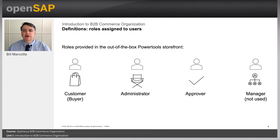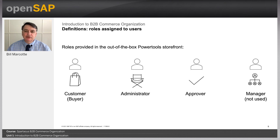The types of users — the roles — are also very important to understand. There are buyers, administrators, approvers, and managers. Buyers are officially named 'customers' inside a B2B commerce organization, but to avoid confusion I'll call the person who makes purchases a buyer. The administrator sets up everything — adds users, gives them roles, and defines cost centers and budgets. The approver approves orders when a buyer's purchase exceeds their limits or the budget. The manager role is included in SAP Commerce Organization sample data but is not used in the out-of-the-box setup.